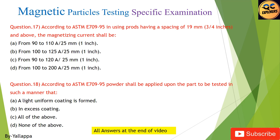Question 17: According to ASTM E709-95, when using prods having a spacing of 19 mm and above, the magnetizing current shall be: (A) 90 to 110 A per 25 mm; (B) 90 to 120 A per 25 mm; (C) 100 to 200 A per 25 mm.